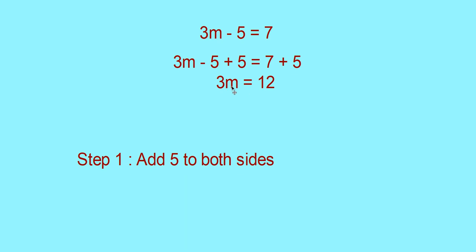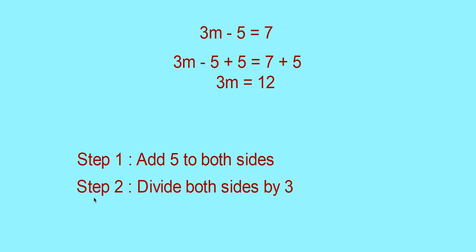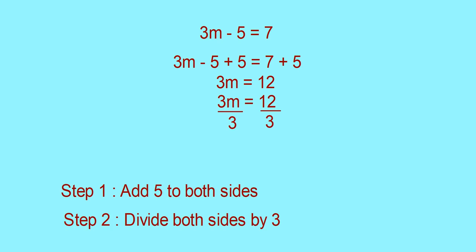Now, to separate m, the next step is: divide both sides by 3. Since it is 3 into m, by dividing by 3, m will be separated. So you can write: 3m by 3 is equal to 12 by 3. The 3s cancel, and you get m is equal to 4. Therefore, the conclusion: Step 1, add 5 to both sides. Step 2, divide both sides by 3. And m is equal to 4.